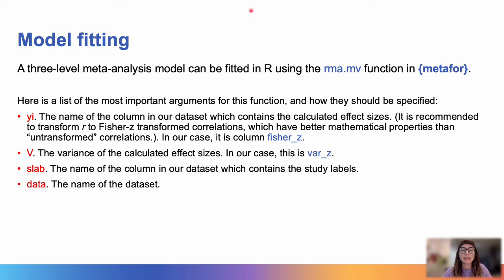So, we definitely need the calculated effect sizes, and when using Pearson's R correlation coefficients, like in our case, it is recommended to transform them to Fisher Z for the analysis, and then when interpreting the results we can transform them back to Pearson's R. So, in our case here, we refer to the Fisher Z column in our data file.